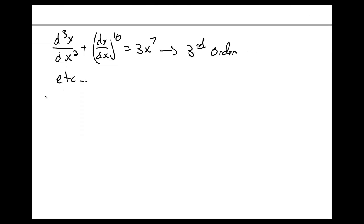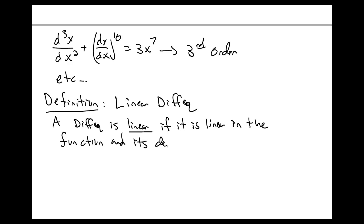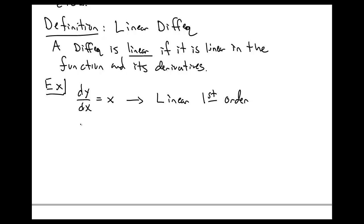Another useful definition is that of a linear differential equation. We say that a differential equation is linear if the equation itself is linear in the function that we want to find and the function's derivatives. Again, it's useful to have a couple of examples. For example, dy/dx equal to x — well, obviously this is linear, it's linear in everything. It's also first order.